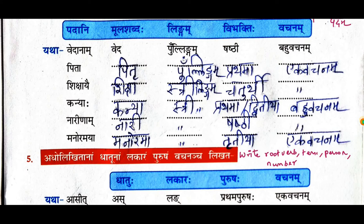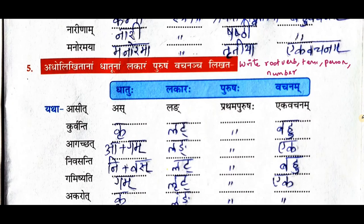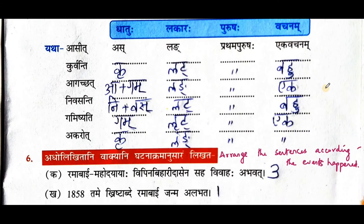Now let us move on to fifth question: adho likita nam dhatu nam lakaram purusham vachanam cha likata. Here we are asked to identify the dhatu, lakara, purusha, and vachanam for each word. The example given is vasith asidh — dhatu is as dhatu, lakara is lang lakara, purusha is prathama purusha, vachanam is ekavachana. First word: kurvanti — dhatu is kri dhatu, lakara is lat lakara, purusha is prathama purusha, bahuvachana.